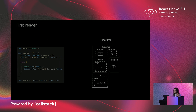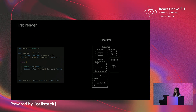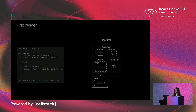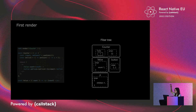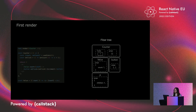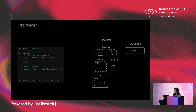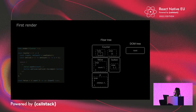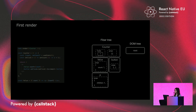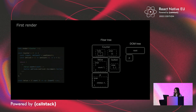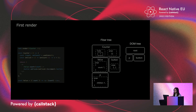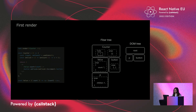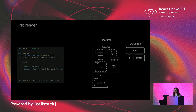We haven't displayed anything on the screen yet — this tree is still virtual. So React is going to go through our fiber tree, and every time it encounters an HTML element it is going to inject it into the DOM to display our application on the screen. So our paragraph and our button are injected, and now our application is live on the screen.